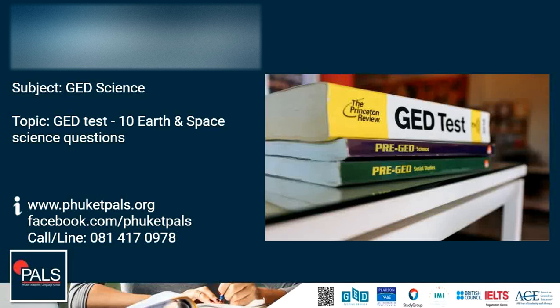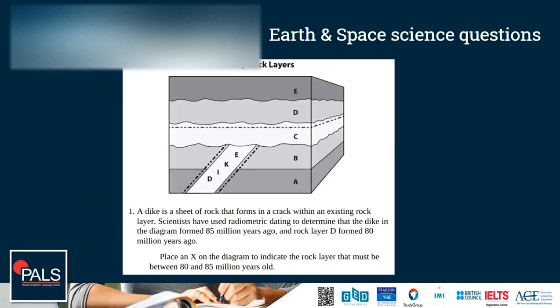The first Earth and Space Science question is based on an illustration. We see sedimentary rock layers here. A dike is a sheet of rock that forms in a crack within an existing rock layer. Scientists have used radiometric dating to determine that the dike in the diagram formed 85 million years ago and rock layer D formed 80 million years ago. Place an X on the diagram to indicate the rock layer that must be between 80 and 85 million years old.